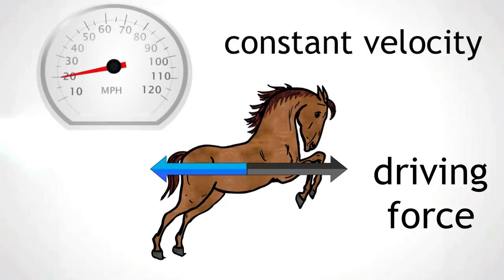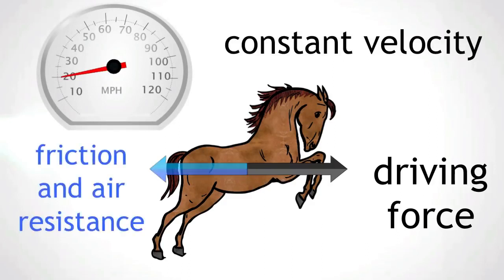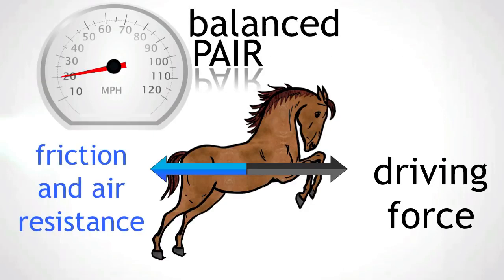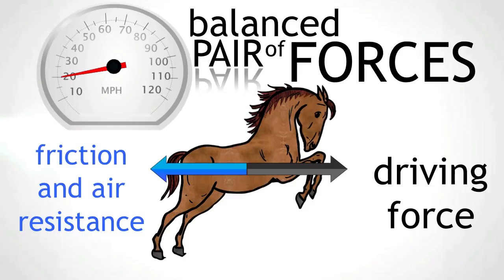And if the horse is travelling at a constant velocity, the force of friction and air resistance are equal in size, but opposite in direction to the driving force. The driving force is now balanced by friction and air resistance, a balanced pair of forces. And the horse now travels at a constant velocity.